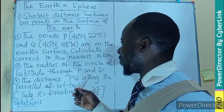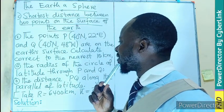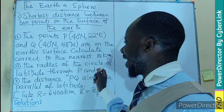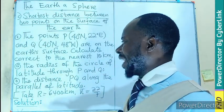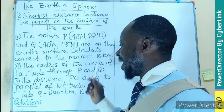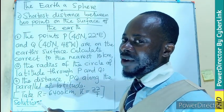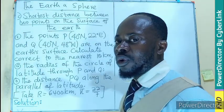On the earth surface, we have to calculate, correct to the nearest 10,000 kilometers, the radius of the circle of the latitude through P and Q. And hence, find the distance PQ along the parallel of the latitude, giving the radius of the earth and the pi to be 22 on 7.